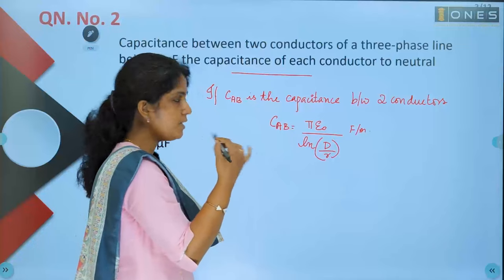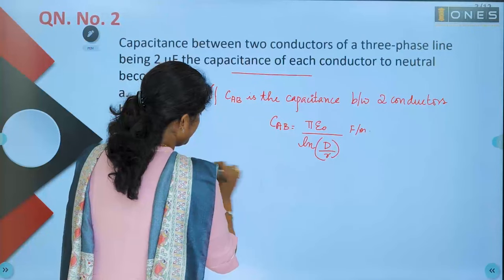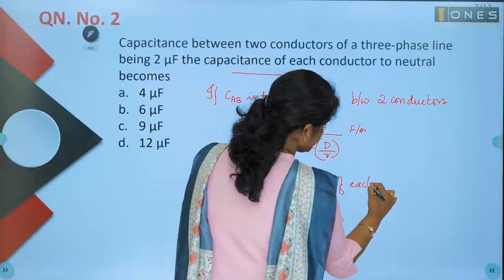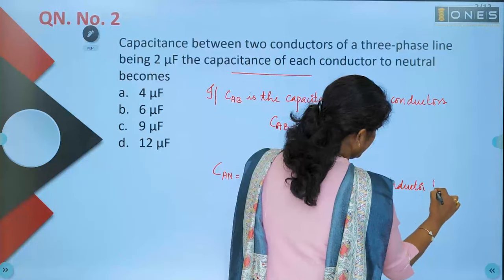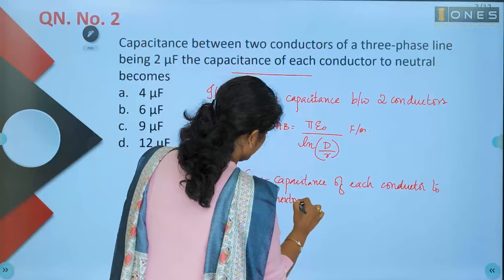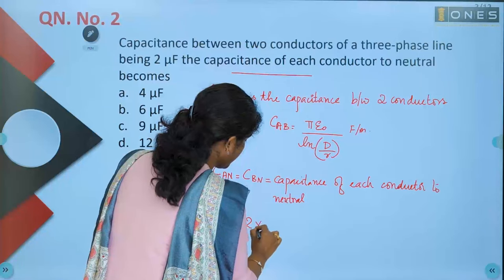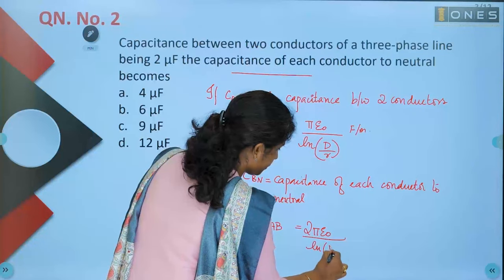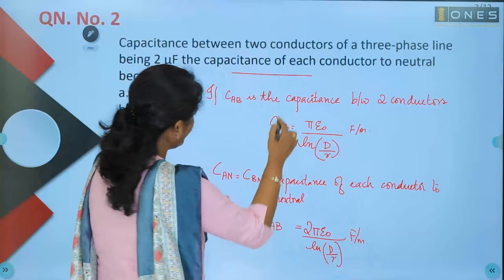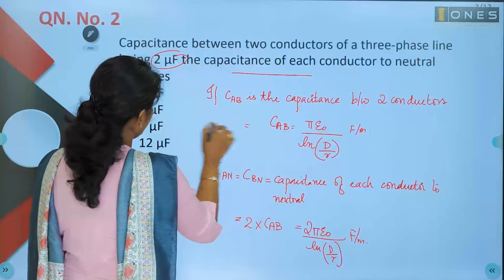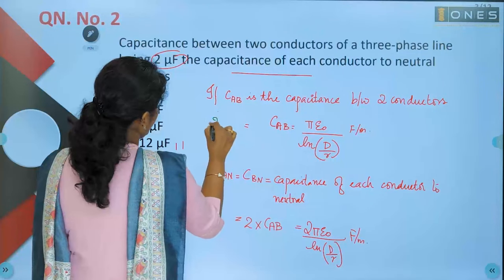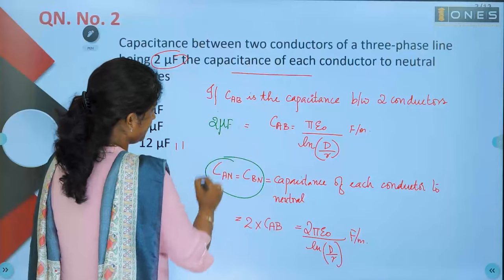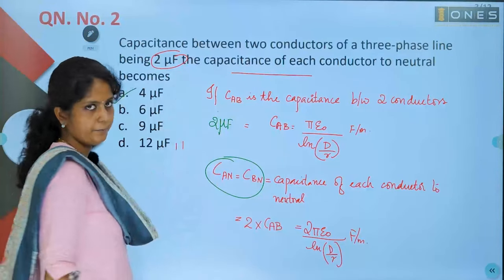For a three-phase line, C_AN or C_BN — the capacitance of each conductor to neutral — is twice C_AB. That is, C_AN = 2 × pi epsilon zero divided by ln(d/r). So substituting the given value: C_AB is given as two microfarads, so C_AN = 2 × 2 = four microfarads. Option A is the right answer.